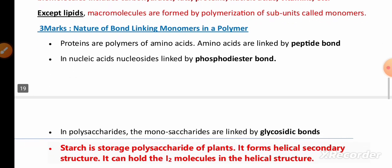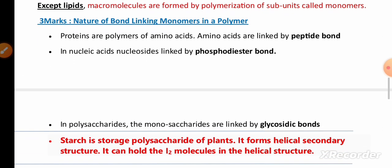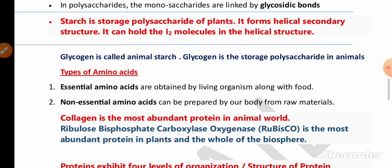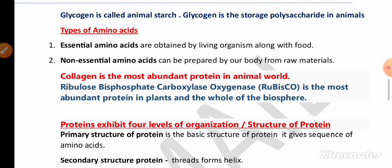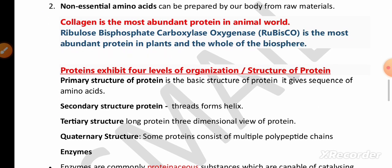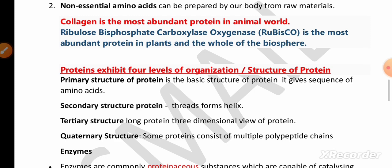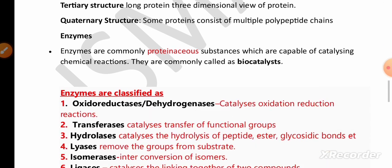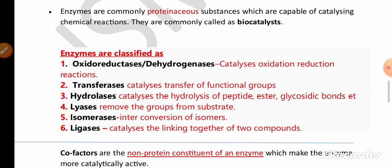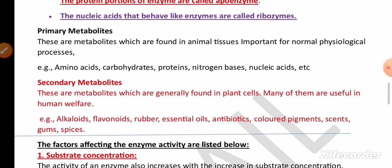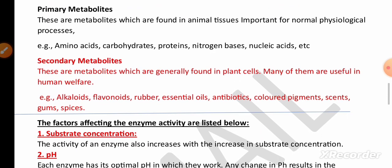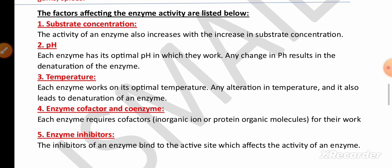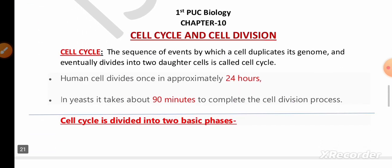From the chapter Biomolecules, remember the three types of bonds — peptide bond, phosphodiester bond, and glycosidic bond. Remember starch and glycogen, types of amino acids (essential and non-essential), and that collagen is the most abundant protein in the animal world, while RuBisCO is the most abundant in the biosphere. Remember the structure of protein at four levels. The definition of enzymes and their classification is important for five marks, as are primary and secondary metabolites and factors affecting enzyme activity.